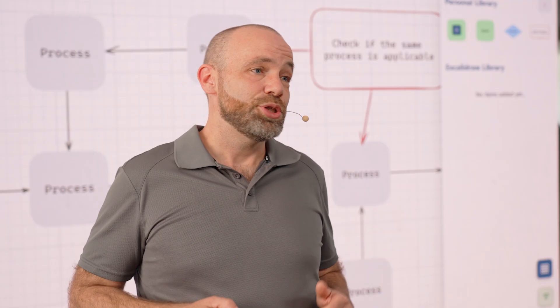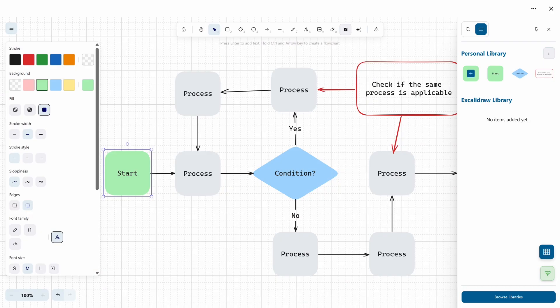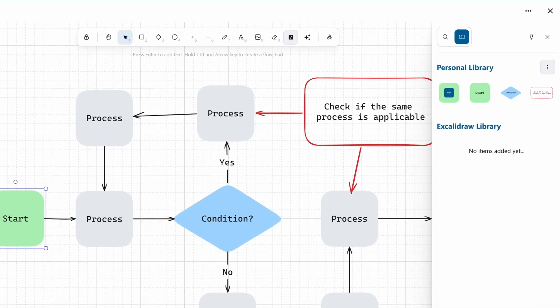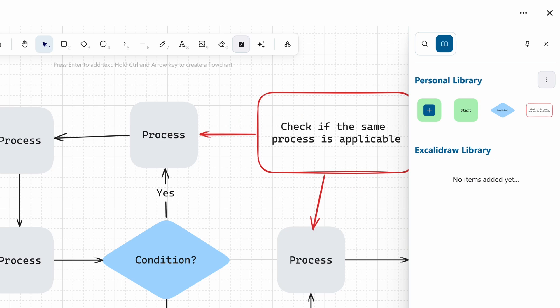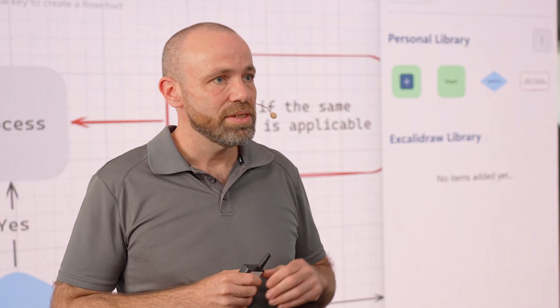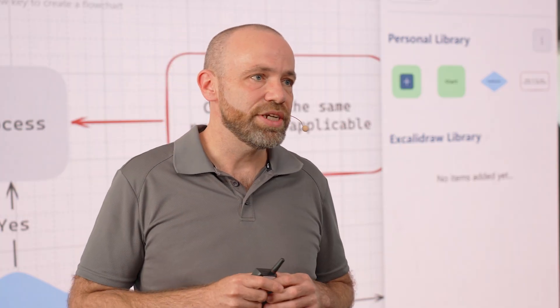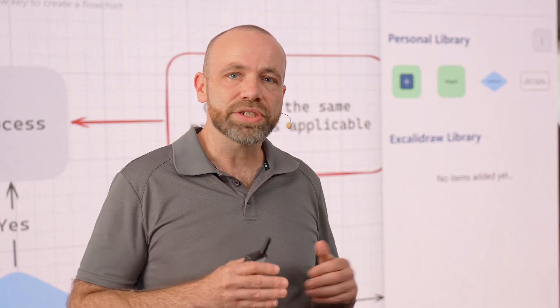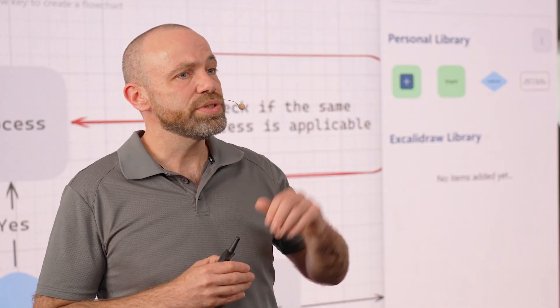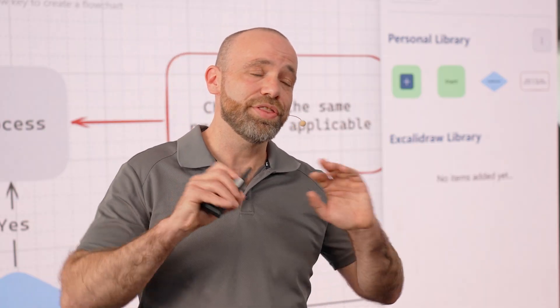You created something amazing? Let's save it for later. Our new library allows you to create and manage your own assets, but it can also give you access to a library of existing objects, like those from Excalidraw — infrastructure and architecture symbols, stick figure illustrations, or UX and wireframe components. All you need for quick visual storytelling without having to draw things from scratch.